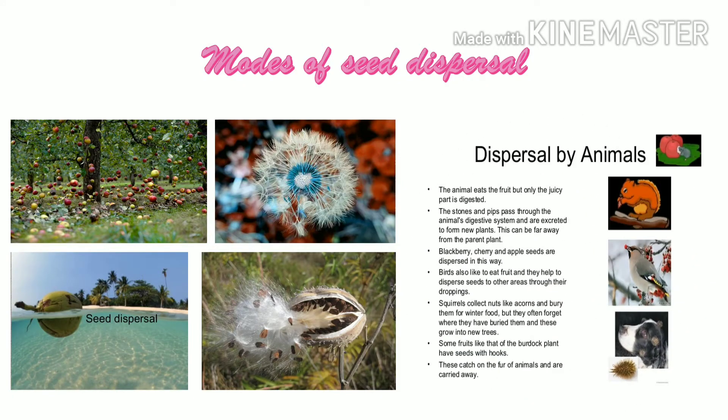Dispersal by animals. Some seeds such as cocklebur have spines or hooks. These seeds stick to the bodies of animals and birds and are thus carried away from the mother plant. Birds and animals eat fruits of various plants; undigested seeds of these fruits pass through their digestive systems intact and are dispersed to other areas.